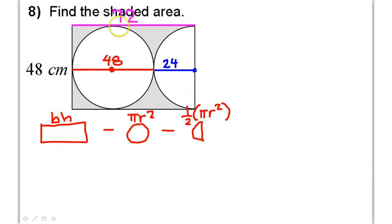That's base times height. So, that's 72 times 48. All right, so we're doing 72 times 48. Okay, we might as well go ahead and finish that off. What is 72 times 48? All right, that's 3,456.